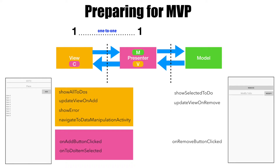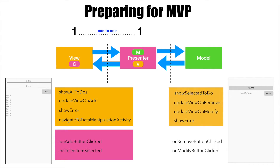you want to update the view based on that particular action. And once again, if you click on the modify button, you want to update the view based on the modify button click. And then, in any of these cases, if something goes wrong, you probably want to show an appropriate error. So, once again, here also you can clearly see that the top four methods correspond to the view and the actions correspond to the presenter.